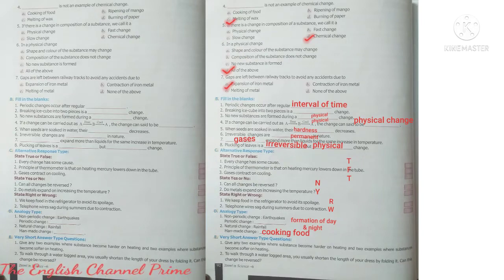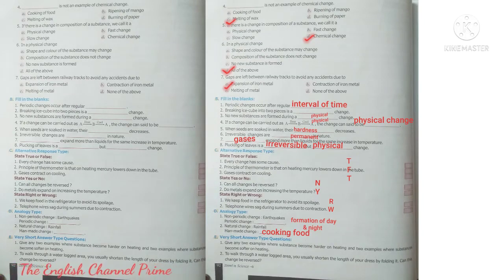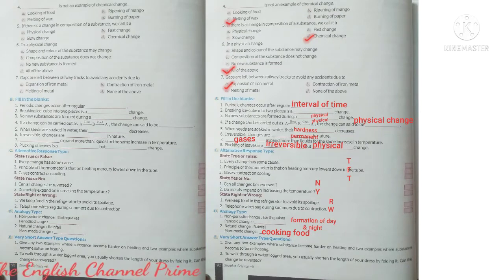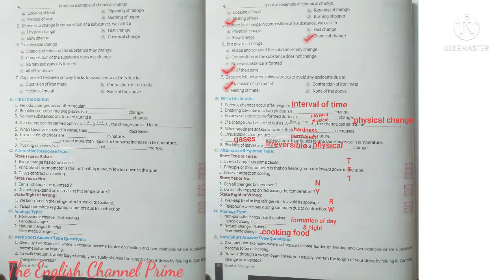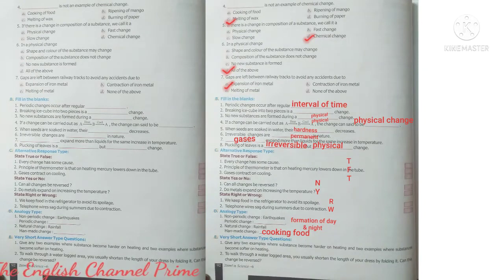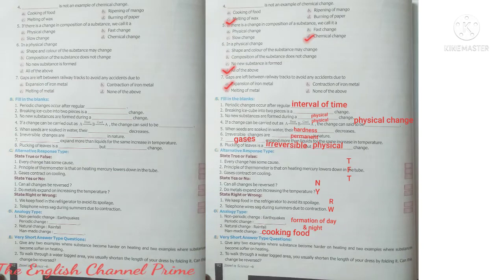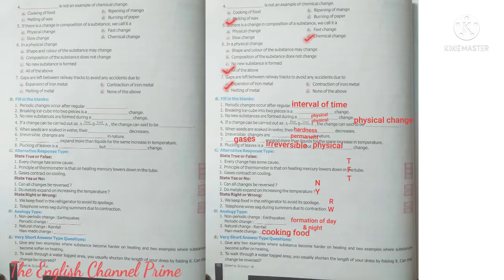Section D — Analogy type. Question one: Non-periodic change — example is earthquake. Similarly, periodic change — what is an example? Yes, it is formation of day and night, or you can write any periodic change like the pendulum clock. Next: Natural change — rainfall. Similarly, man-made change — you can give an example such as cooking food.